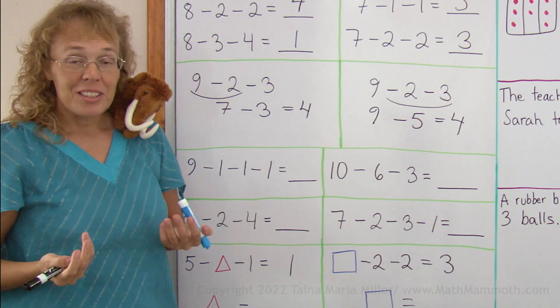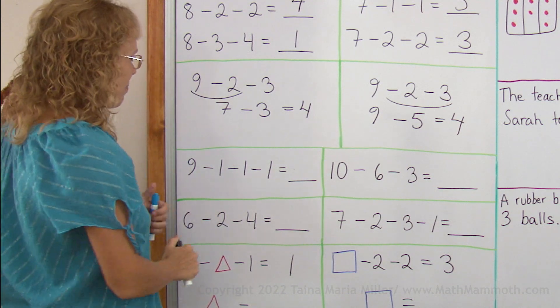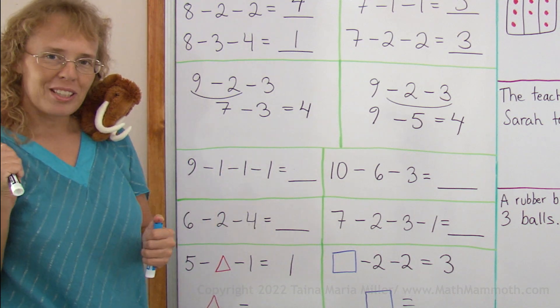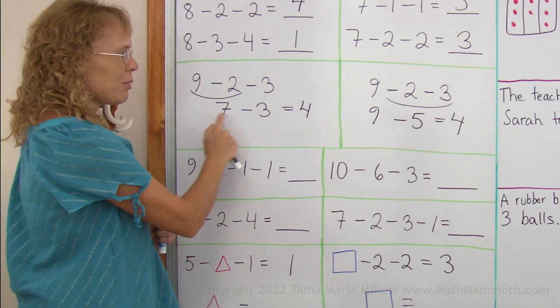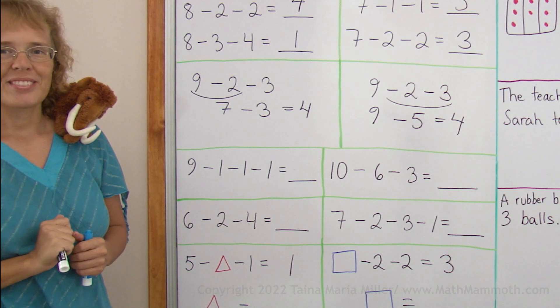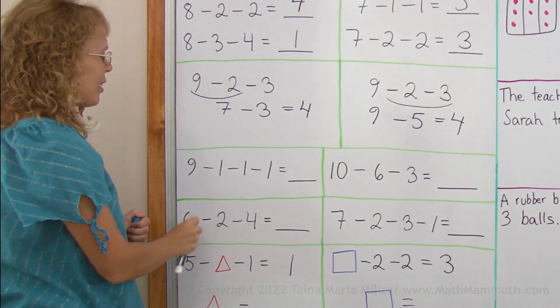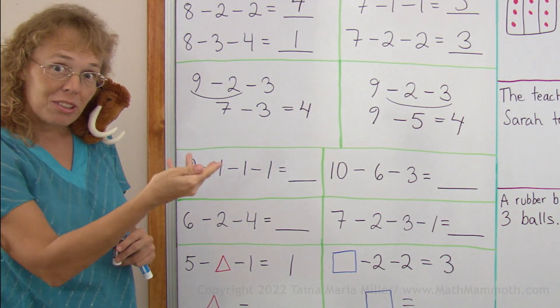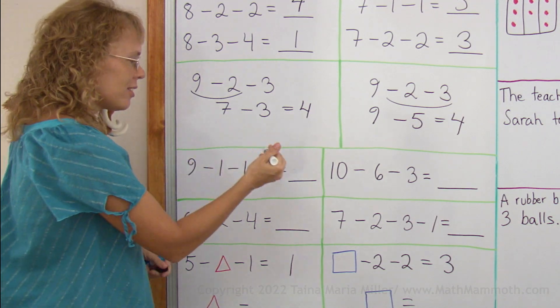Let's solve these 4 subtraction problems. 9 minus 1 minus 1 minus 1. How would you want to think about that problem? This way or that way? I think it's easier this way. Okay, there's 1 and 1 and 1 going away. It's like 9 minus 3. So the answer is 6.